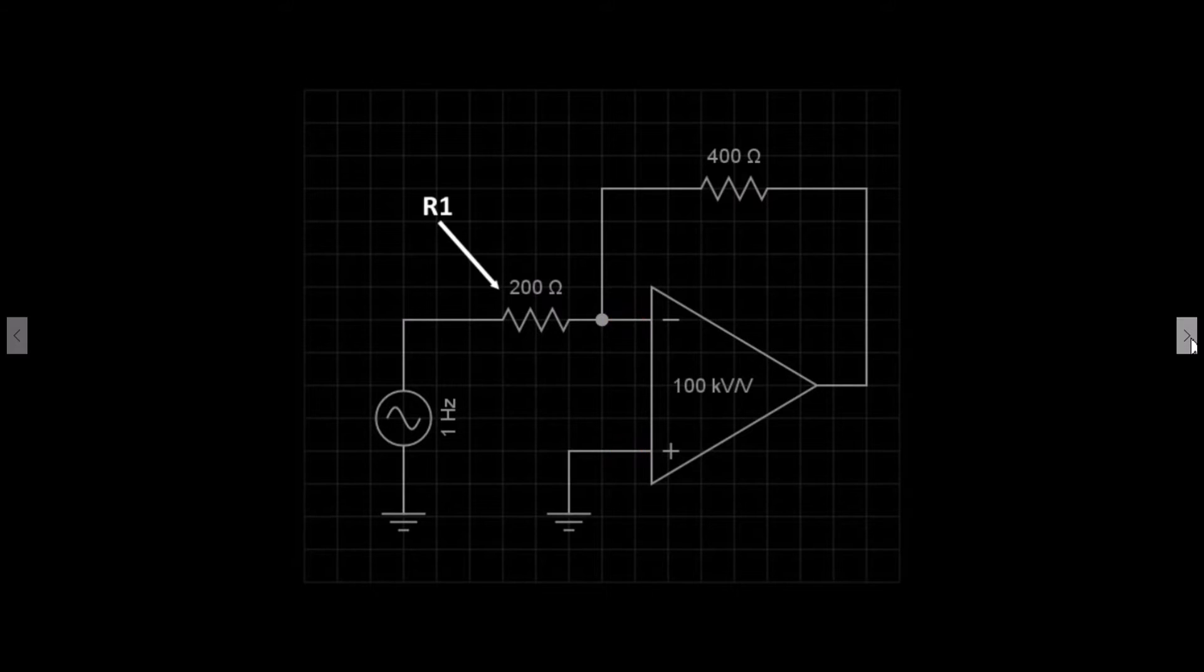Resistor 1 is connected between the input signal and the inverting input. Resistor 2 is connected between the output and the inverting input. The input signal is a 10 volt peak to peak sine wave. Resistor 2 is used to create the negative feedback loop. The non-inverting input is connected directly to ground.